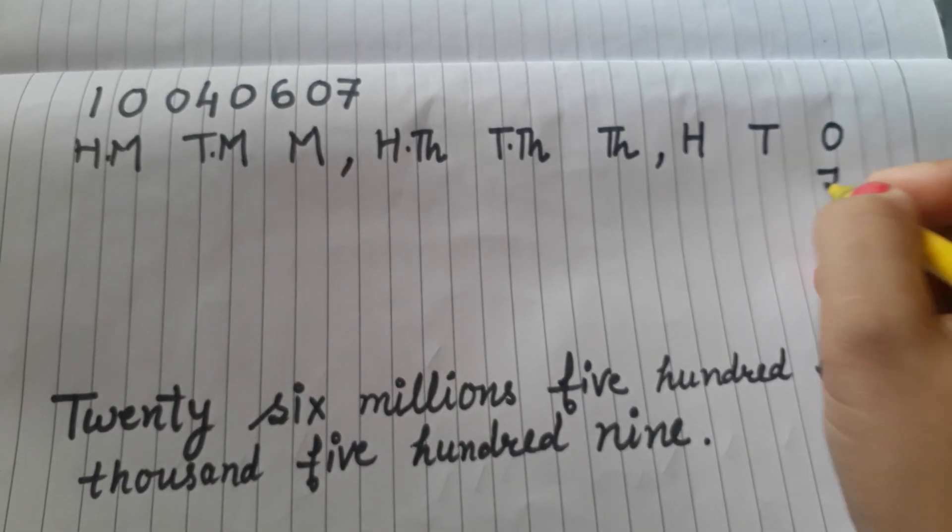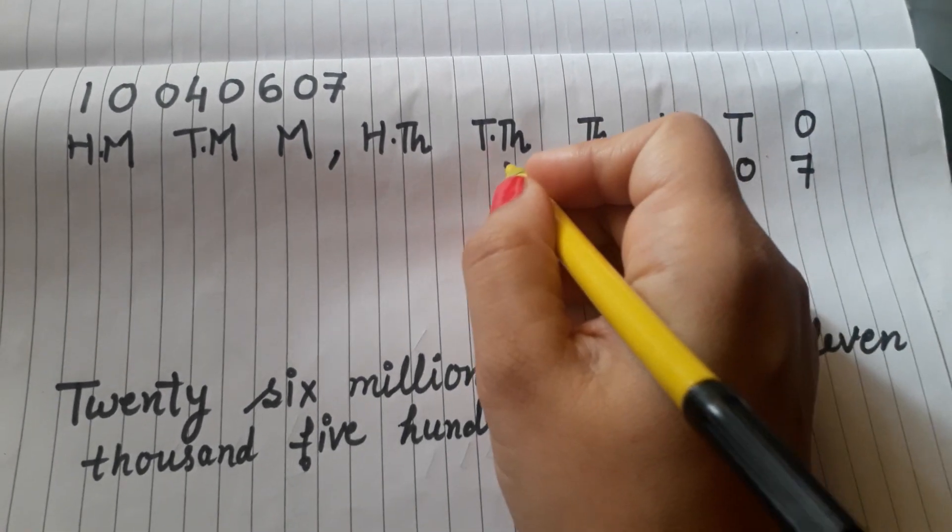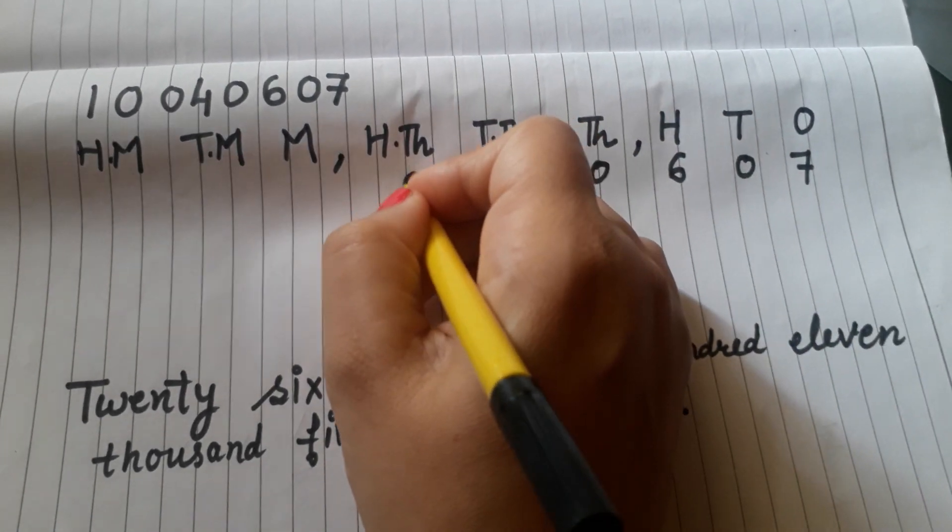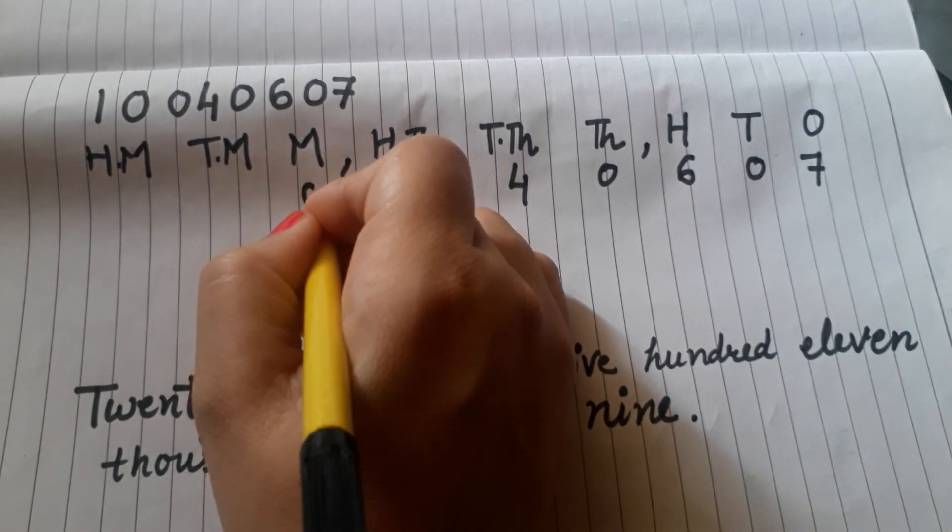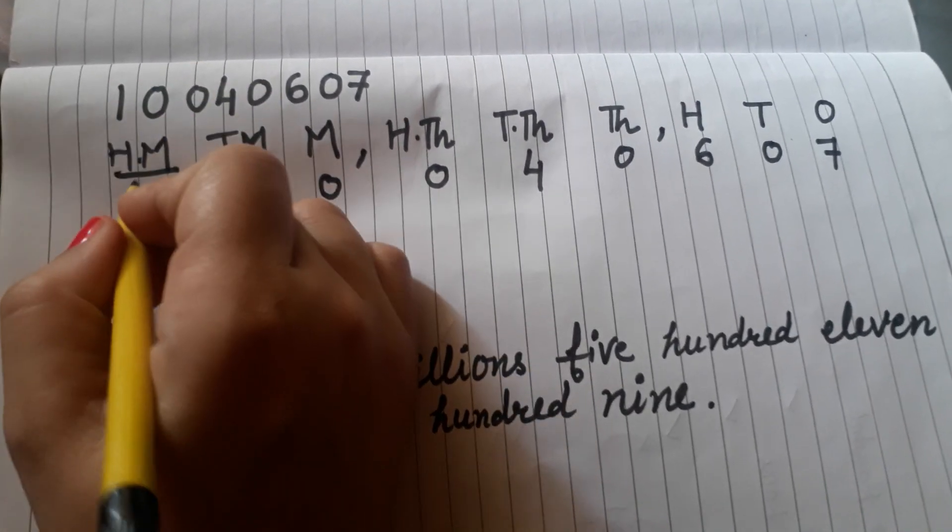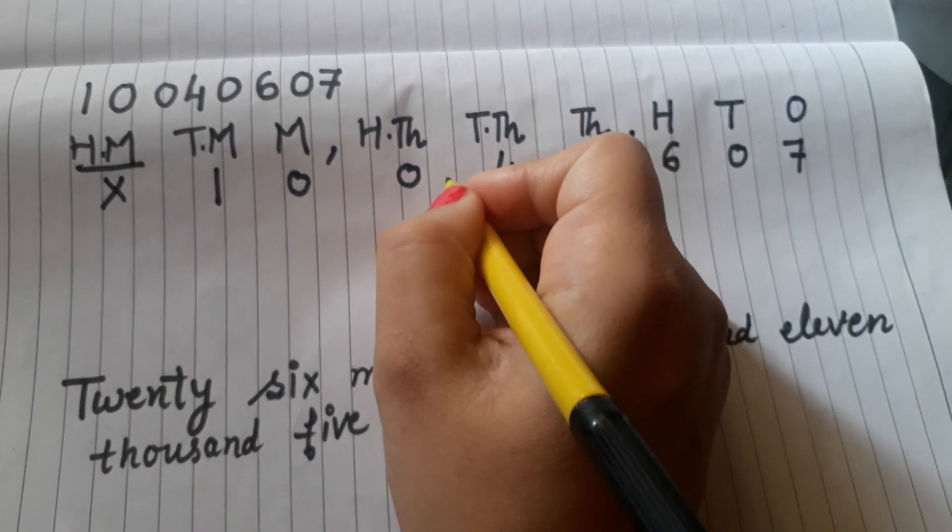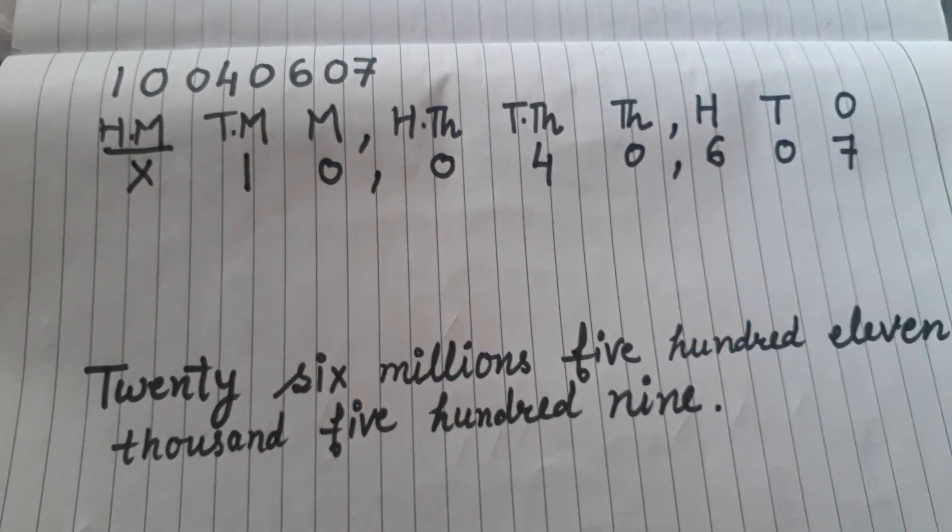Starting from the right: 7, 0, 6, 0, 4, 0, 0, 1. But in the hundred millions place there isn't any digit. We place the commas here and here.